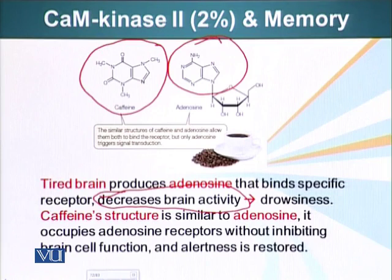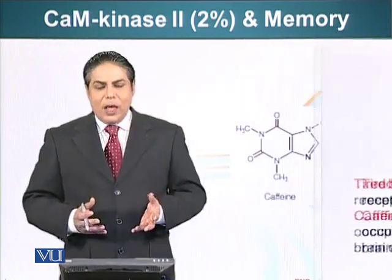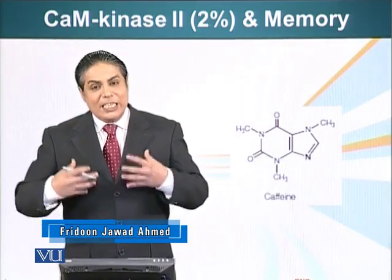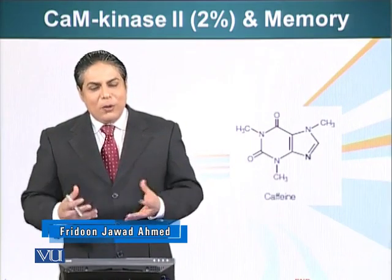Caffeine binding to those receptors does not cause the conformational change of these receptors, and it prevents adenosine — the natural ligand — from binding. So this caffeine is acting as an antagonist. This is how we keep ourselves alert by drinking caffeine in the form of coffee, tea, or perhaps cola. This is one of the simple ways how we manipulate our signaling system every day without knowing what we are doing.